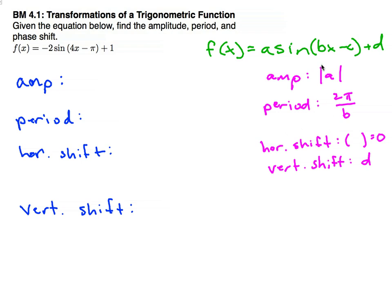The horizontal shift, we're going to take what's in the parentheses and make that equal 0, since that's kind of where we start off with on a sine function. And the vertical shift is d.